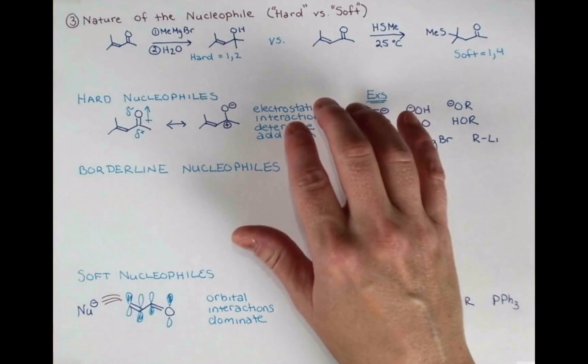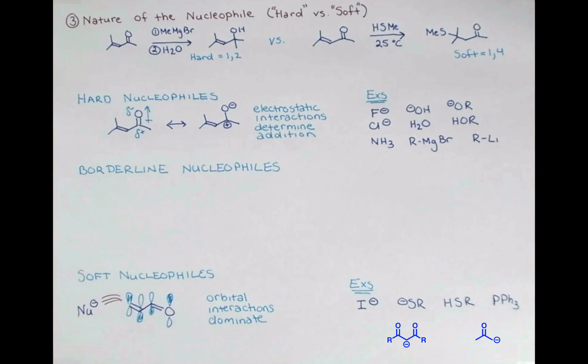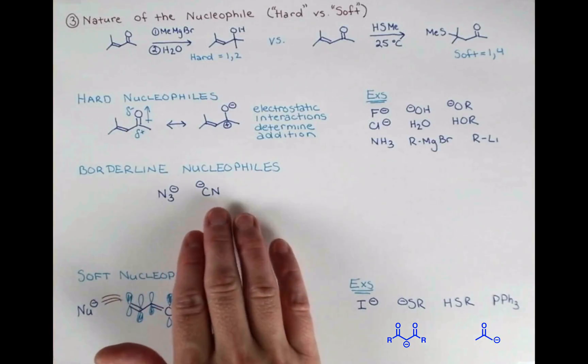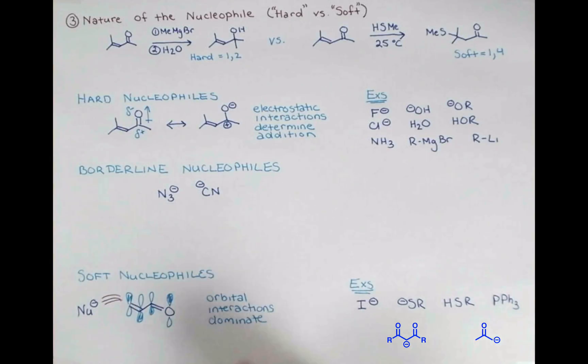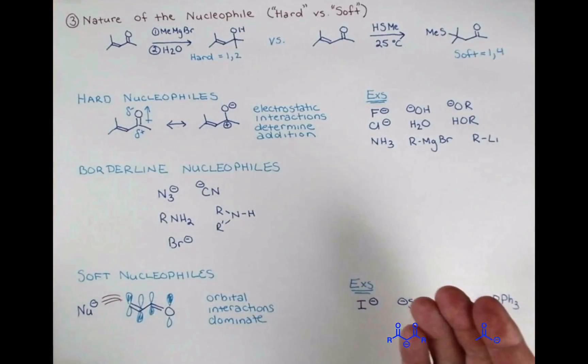But of course, it can't just be all so cut and dry as hard and soft nucleophiles. We do have some that are borderline. Let's look at some examples. The azide nucleophile is borderline. We already saw that the cyanide nucleophile is borderline and we saw how we could control that reaction by either cooling it down to give the 1-2 product or warming it up to make the reaction reversible and get the 1-4 product. Other examples are primary and secondary amines and bromine. Bromine is more electronegative and smaller than iodine, but larger than fluorine and chlorine, so it's somewhere in the middle.